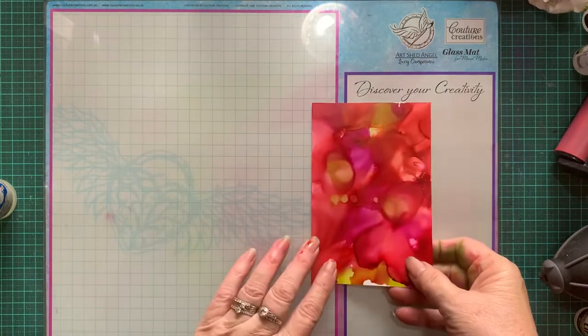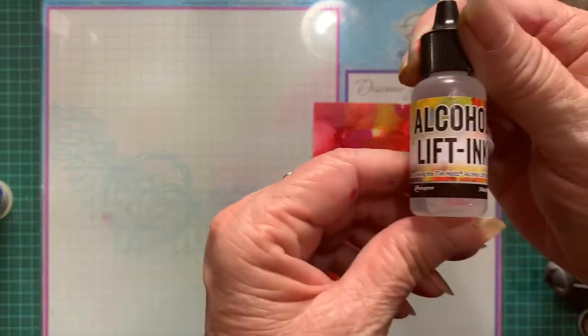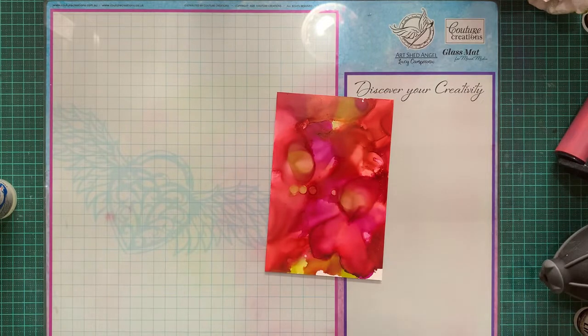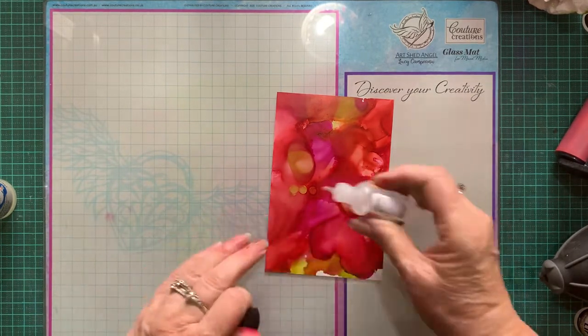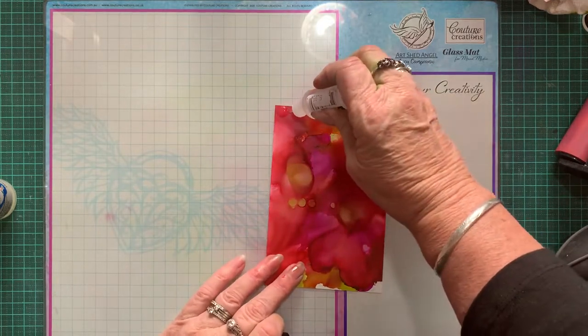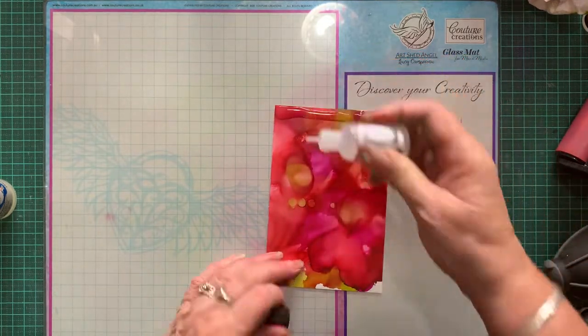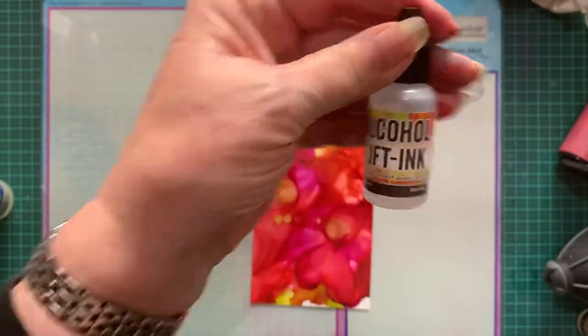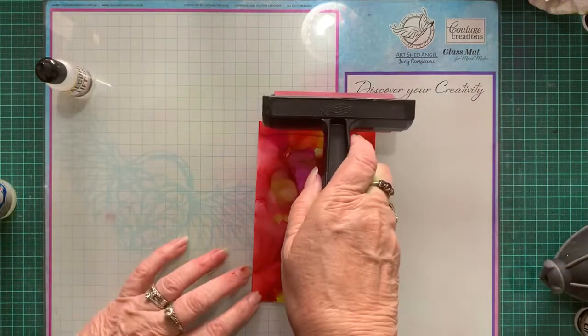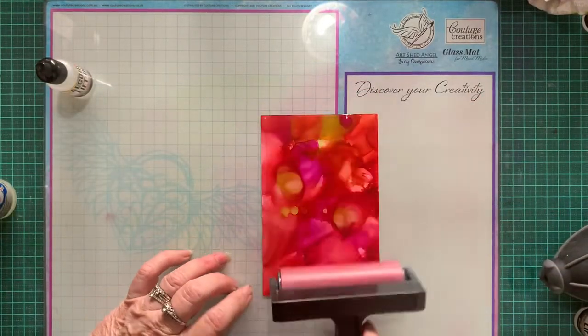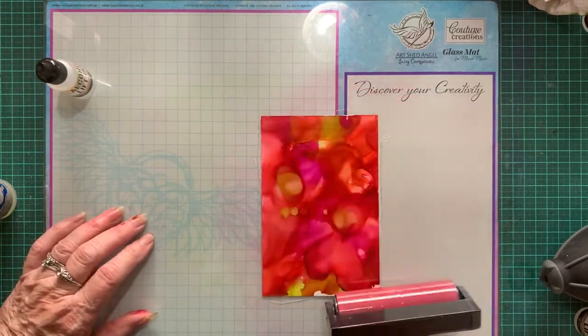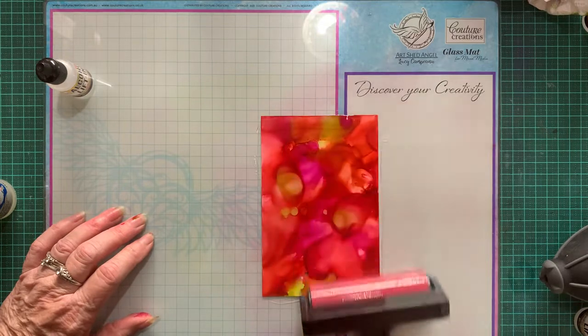With this we're going to use what's called alcohol lift ink. I've got some cardstock here. Some people put it across the middle, I personally put it across the top. You just put a bit of a line there. This is alcohol lift ink. And very gently, don't put a lot of pressure or the roller won't roll, you just roll it down so that it covers all of the paper.